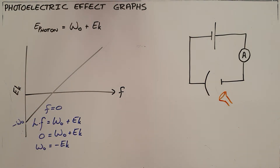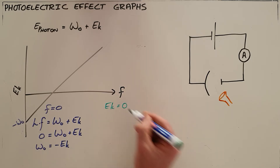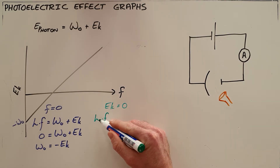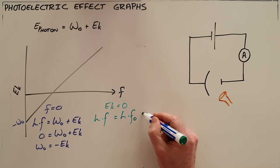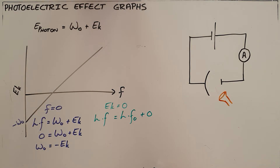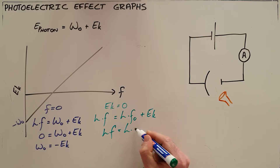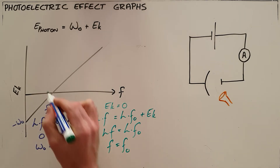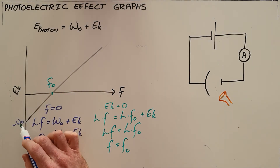The second intercept is where the graph crosses the x-axis, which happens when the kinetic energy is equal to zero. Rewriting the equation: the energy of the photon equals Planck's constant times frequency, and the work function equals Planck's constant times the threshold frequency. With kinetic energy equal to zero, h times f equals h times f-zero, which tells us that the frequency at the point where kinetic energy is zero is our threshold frequency.